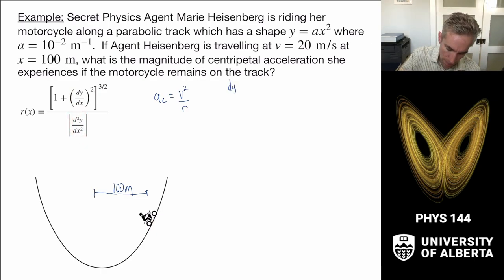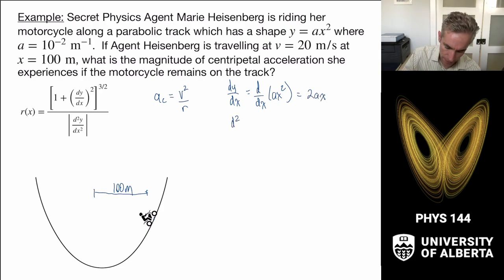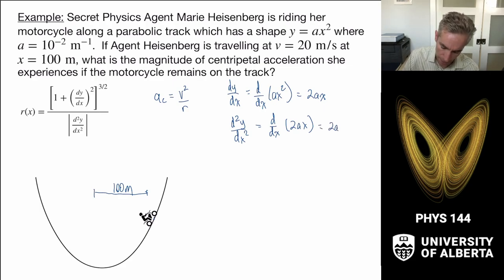We know that dy/dx is the derivative with respect to x of ax squared. A is a constant, and the derivative of x squared is 2x, so this derivative is 2ax. The second derivative d²y/dx² is d/dx of 2ax. Since 2a is a constant, the derivative of x is 1, so it's 2a times 1, which comes back to 2a.